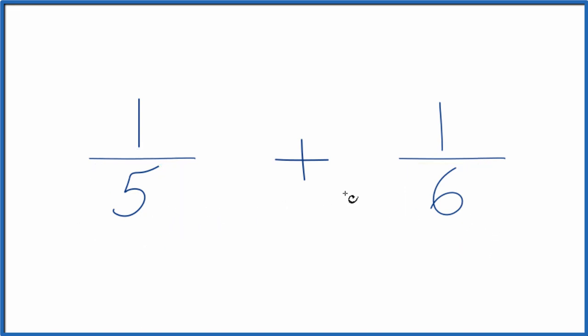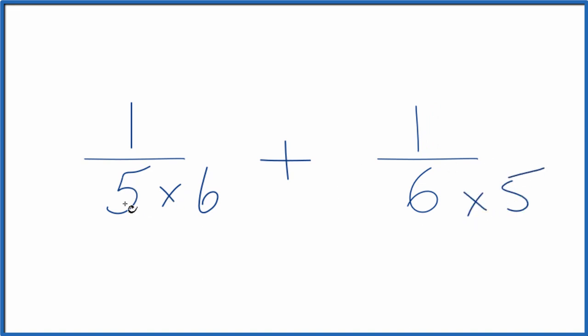Probably the easiest thing to do is we have five here. Let's multiply five times six. And then over here, let's multiply six times five. That way, five times six is thirty, six times five is thirty. We have the same denominator.